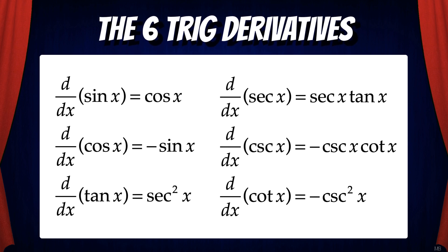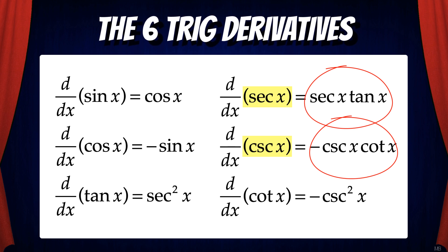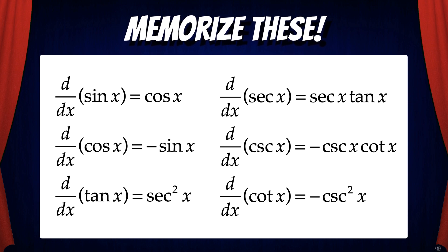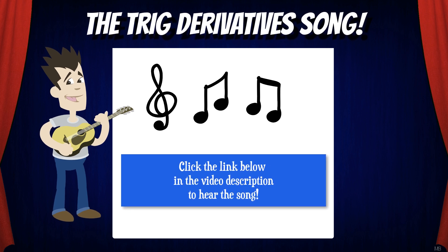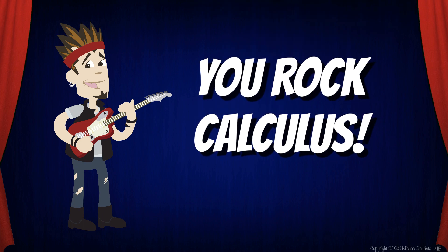And here are the six trig derivatives. While it's important to know how to derive these, you're going to want to commit them to memory because they show up so often in calculus. A couple of patterns to note: all of the co-functions — cosine, cosecant, and cotan — have negative derivatives. Also, tan x and cotan x are the only functions with derivatives that are squared. And secant x and cosecant x are the only functions whose derivatives have two different terms. In a future video, we'll look at how to apply these derivatives to example problems. One thing that may help with memorization is listening to my trig derivatives song — music is always a great tool. Good brain workout today. You now know the six trig derivatives, and that's how you rock calculus!